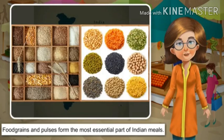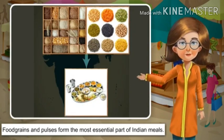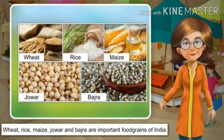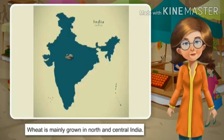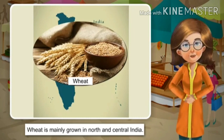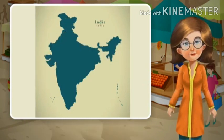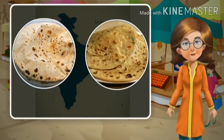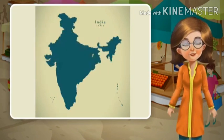Wheat, rice, maize, jowar, and bajra are some of the most important food grains grown in different parts of India. Wheat is mainly grown and consumed in north and central India. People make chapatis, puris, and parathas from wheat.